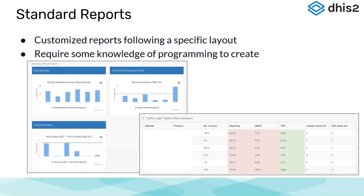Standard reports are customized reports with a specific layout. Creating standard reports requires some programming knowledge — they can be created using iReports in the Jasper report format. We are not going to discuss creating standard reports today because it's out of scope, requires programming knowledge, and takes some time. Anyone who wants to see how standard reports are created can refer to the DHIS2 documentation. If you want a report in a certain format, you will need to use standard reports.